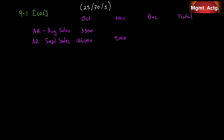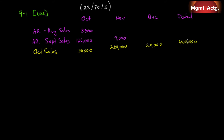Now we're ready to do October. October sales are $400,000, so 25% — $100,000 — of October sales will be collected in October. We will collect 70%, or $280,000, of those sales in November, and $20,000 in December. If we total across, we get $400,000, which is October sales. Then for November sales of $800,000, 25% — or $200,000 — will be collected in November.